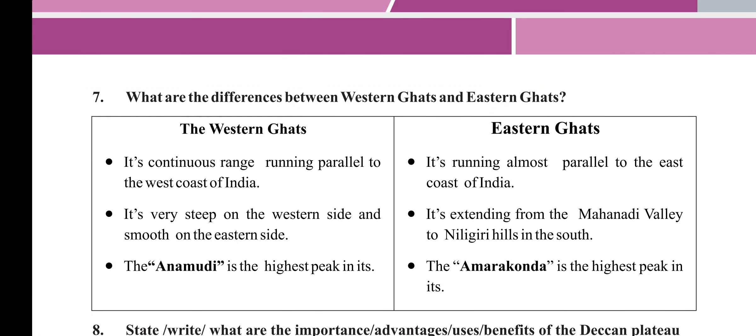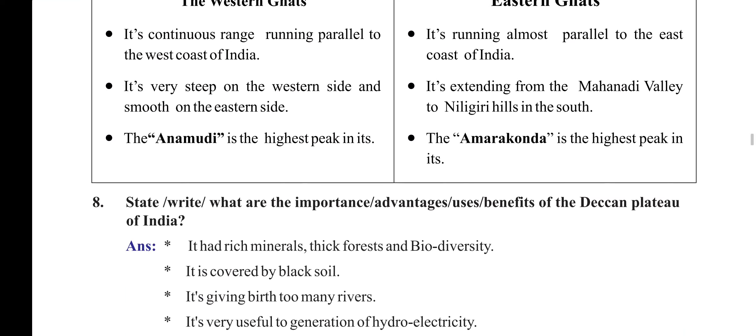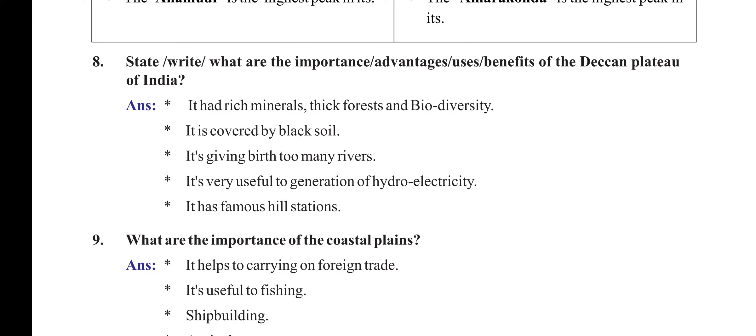What are the differences between the Western Ghats and Eastern Ghats? The Western Ghats form a continuous range running parallel to the west coast of India; they are very steep on the western side and smooth on the eastern side. The Eastern Ghats run almost parallel to the east coast of India, extending from the Mahanadi Valley to the Nilgiri Hills in the south. What are the importance of the Deccan Plateau? It has rich minerals, thick forest, and biodiversity; is covered by black soil; gives birth to many rivers; is useful for generation of hydroelectricity; and has famous hill stations.